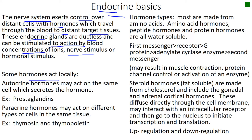Endocrine glands can also be regulated by hormones from other areas. For instance, the hypothalamus regulates the anterior and the posterior pituitary to release hormones, which then can go and act distantly.